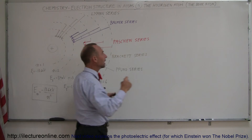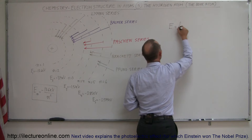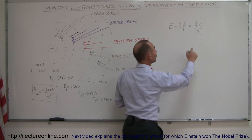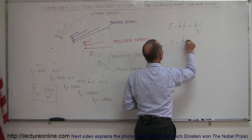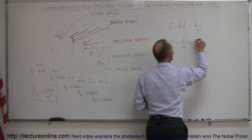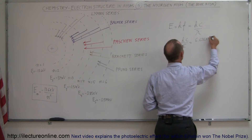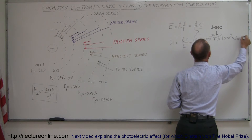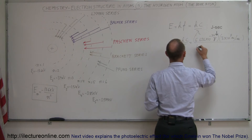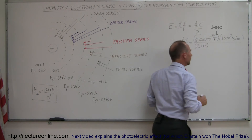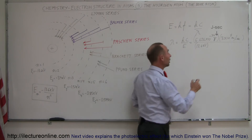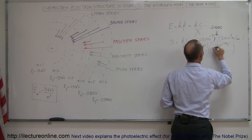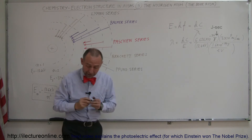So what kind of photon has an energy of 13.6 electron volts? We have the equation where energy equals h times frequency, which equals h times c over lambda. Solving for lambda: lambda equals hc divided by energy. We plug in Planck's constant — 6.626 times 10 to the minus 34 joules — multiplied by the speed of light, 3 times 10 to the 8 meters per second, divided by 13.6 electron volts. Since electron volts is not a standard unit, we convert using 1.6 times 10 to the minus 19 joules per electron volt.